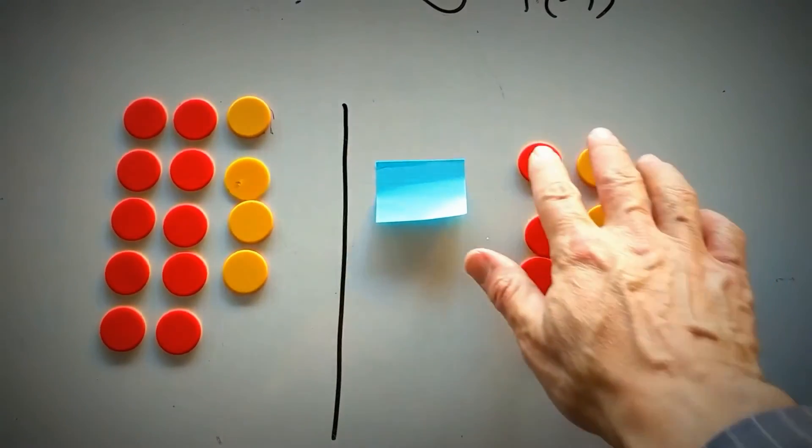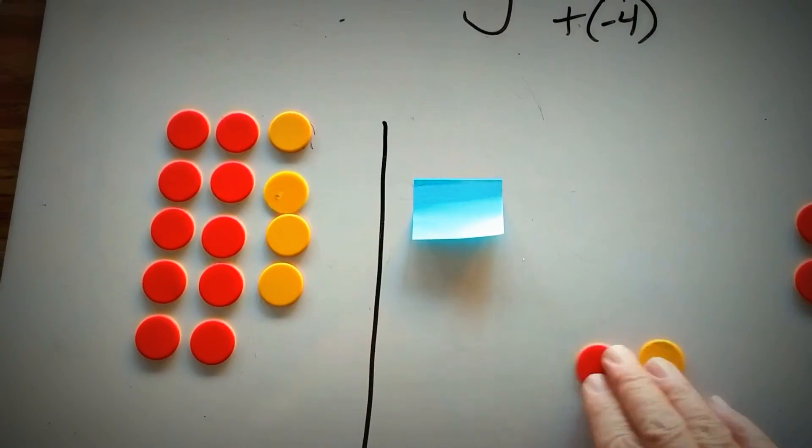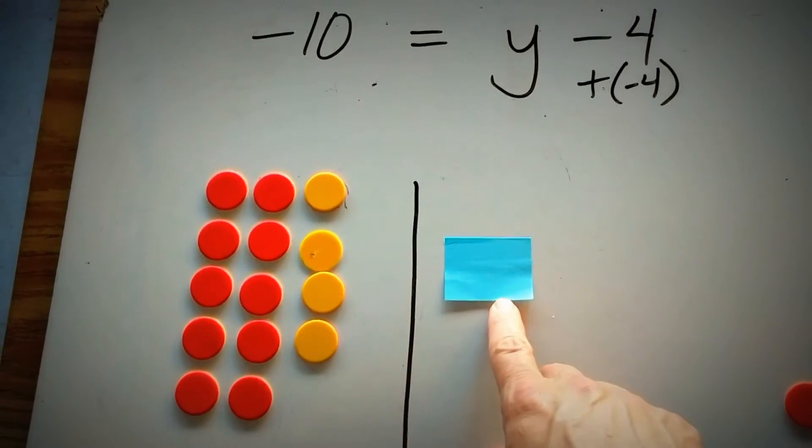So the right-hand side, I have zero pairs. These are all matched up. I can take these off the board. I'm simply left with y here, or my variable.